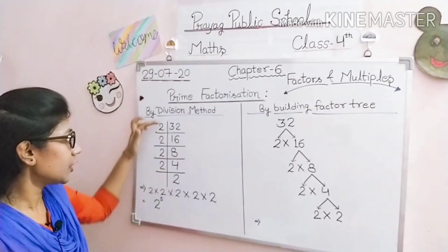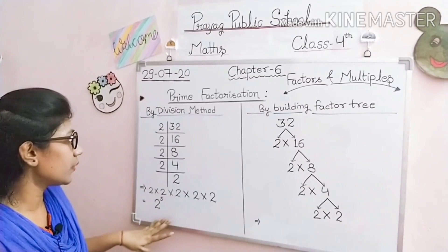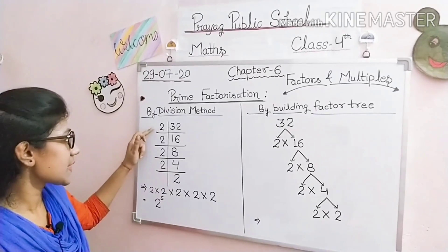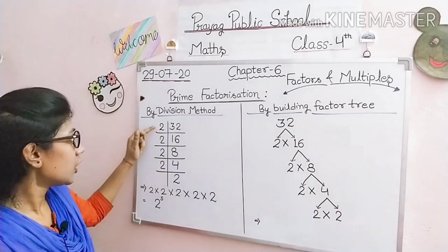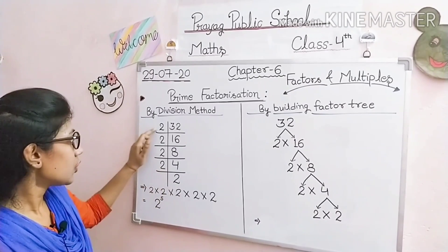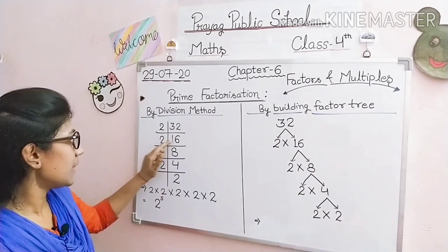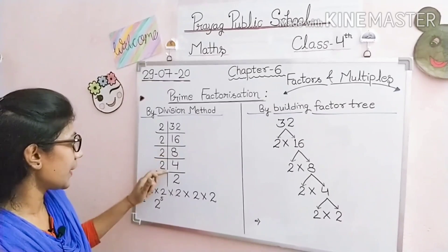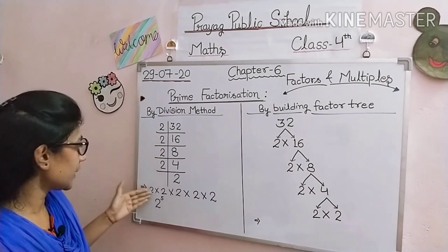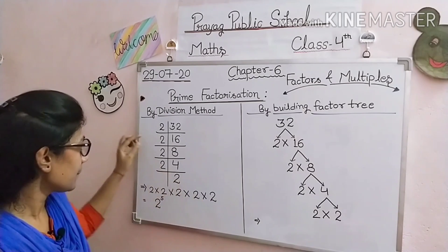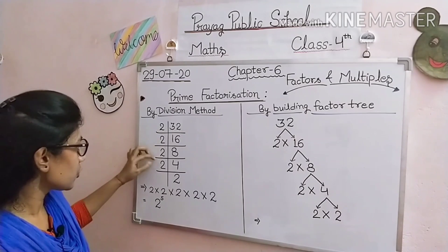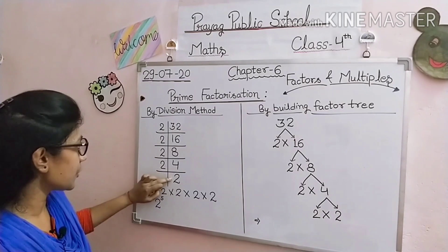Given number है 32. 32 के prime factorization को division method से find out करना है। हम 32 को सबसे छोटे prime number से divide करेंगे। इस process को तब तक करेंगे जब तक last में prime number ना मिल जाए। 2 × 16 = 32. इसी तरह process करते जाएंगे और जो factors मिले उन्हें product के form में लिखेंगे: 2 × 2 × 2 × 2 × 2.